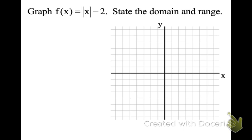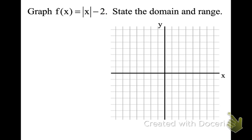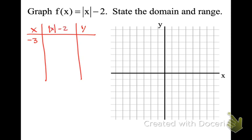Let's go back to the first step of graphing. This is always going to be your fallback — when you graph, we're going to make a table. We want some negatives and some positives. For the absolute value equation y = |x| - 2, starting at x = -3: the absolute value of -3 minus 2 is 1, so the point is (-3, 1). Then x = -2: |(-2) - 2| = 0, so the point is (-2, 0).